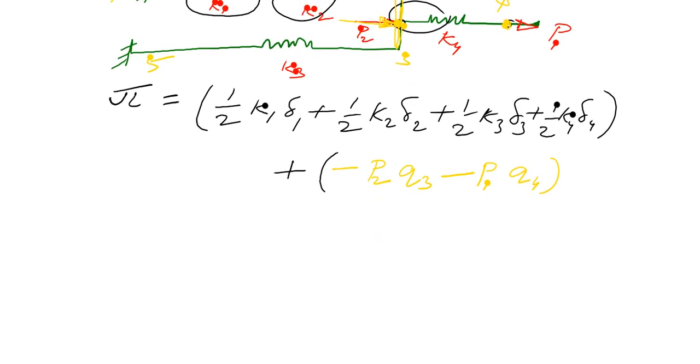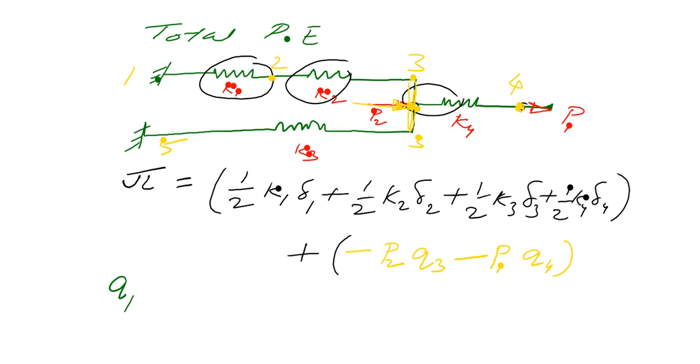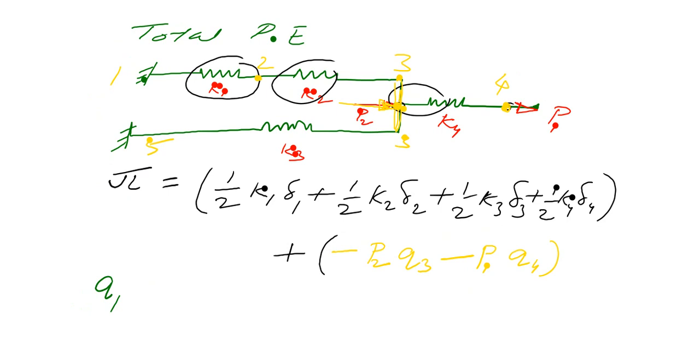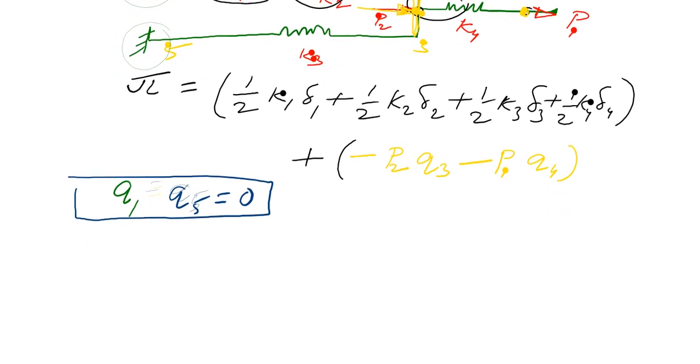What is Q1? Q1 is the displacement at node 1. Similarly Q2, Q3, Q4, Q5 - these are the displacements at each node. But from the diagram we can say that node 1 and node 5 are fixed. It means the displacement will be 0. Q1 and Q5 should be 0 because they are fixed. The remaining are Q2, Q3, Q4 - these are the unknown displacements that you have to calculate.